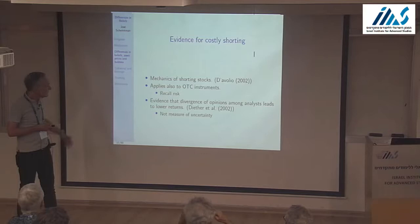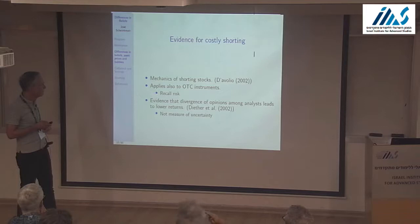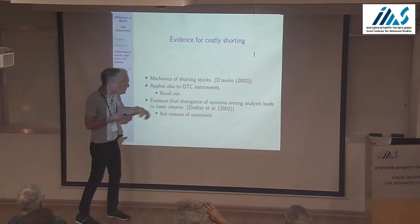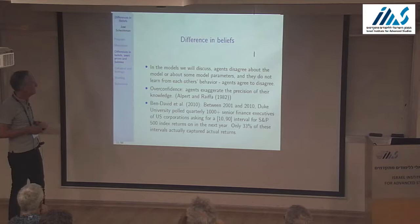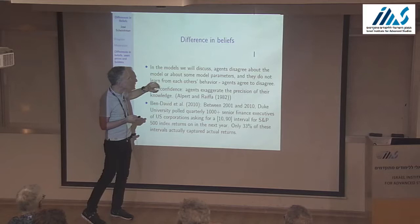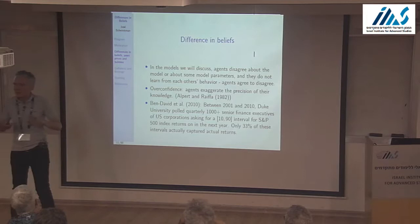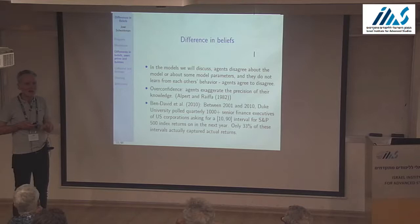There's a lot of evidence that shorting is costly — empirical work by Duffie and co-authors shows this clearly. When I talk about difference in beliefs in these models, agents disagree about the model or about model parameters. That distinction isn't very useful because disagreeing about the model is the same as disagreeing about parameters, if you allow infinite-dimensional parameter vectors.